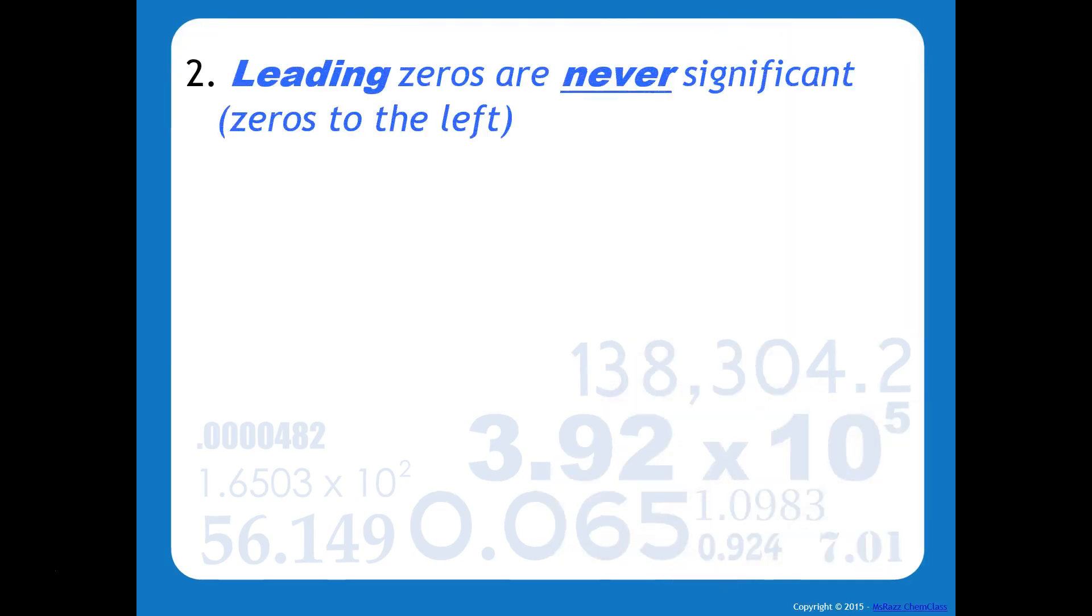The second rule is that leading zeros are never significant. And these are zeros to the left of the nonzero numbers. For example, 0.003 only has one significant figure. 0.04 also has one sig fig.